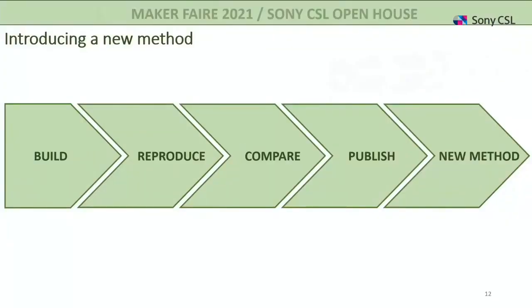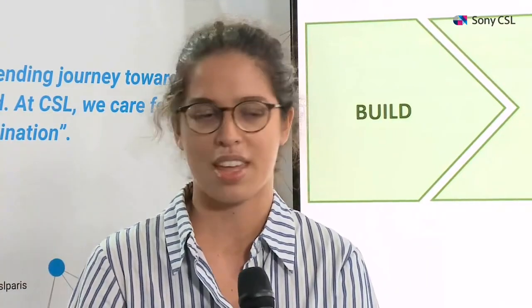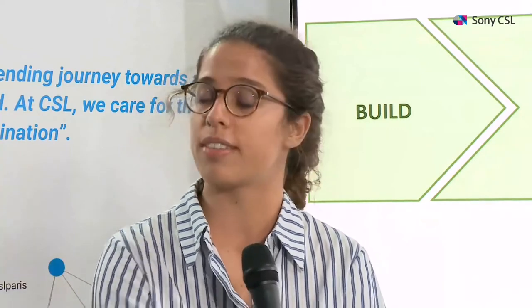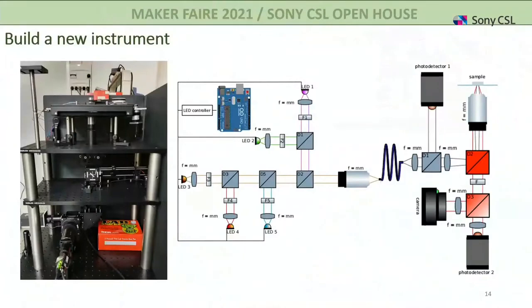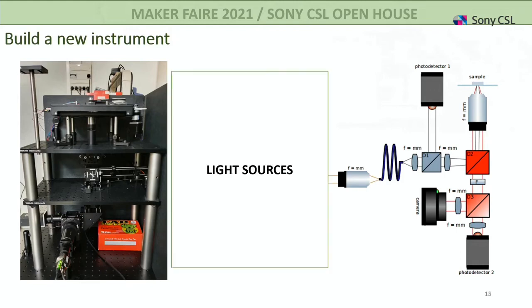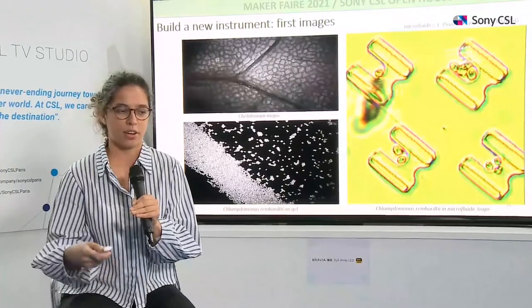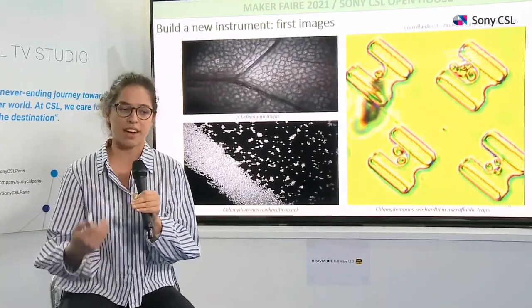Introducing a new method is not easy. The first step was to build an instrument, then verify its trustworthiness by reproducing experiments from the literature and comparing results with partners using the same samples. Finally, we published a paper to present our instrument to the community. For the first year of my PhD, I worked on building the instrument at Sony and ENS — built from scratch — consisting of several light sources injected into the setup to illuminate the sample and collect fluorescence using either a camera or photon counter.